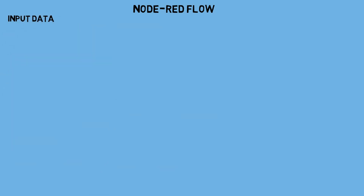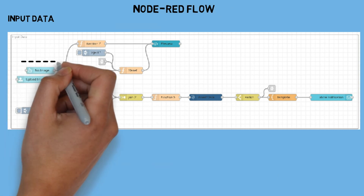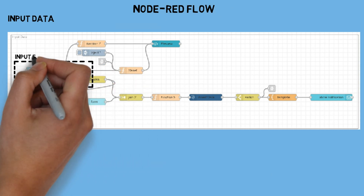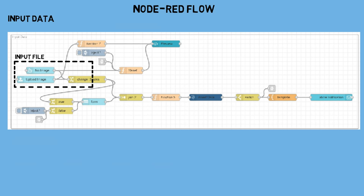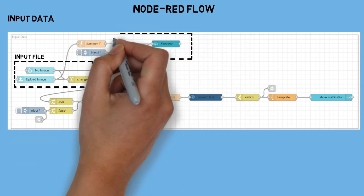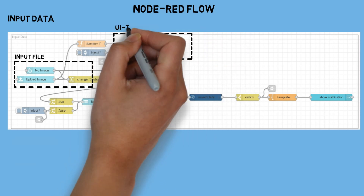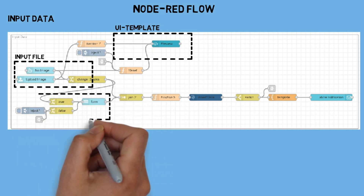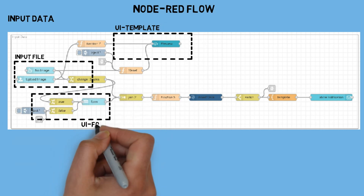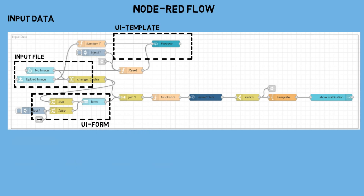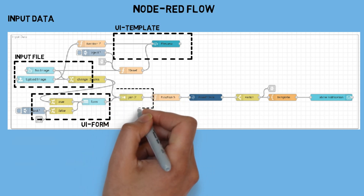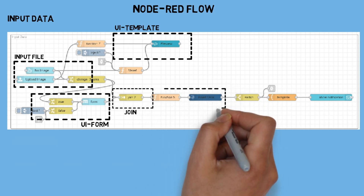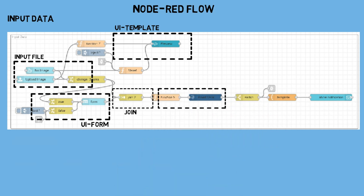And here is the Node-RED flow. First is the flow for inserting data into the database. I use UI File input to upload an image and display the uploaded image in a UI template for preview. Then a UI form is used to input other data such as item number, family, and other details. I use a Join node to combine the uploaded image and form submission, ensuring the data is inserted only after both the image upload and form submission are completed.